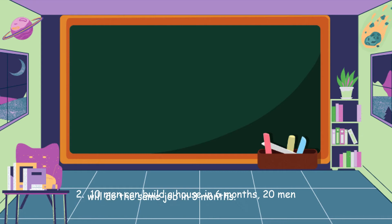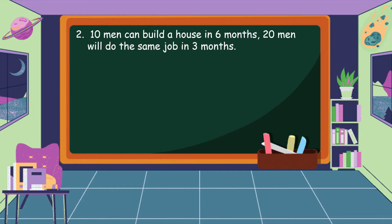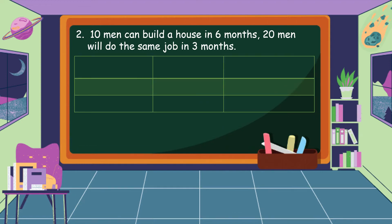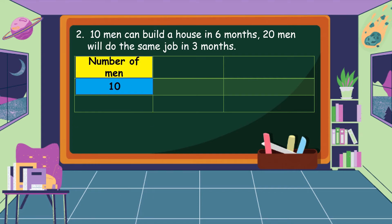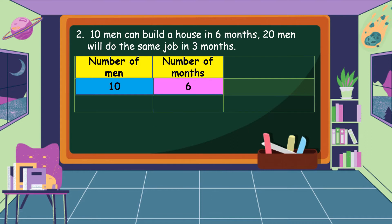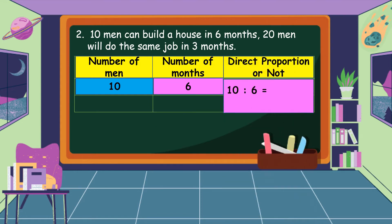Second situation: 10 men can build a house in 6 months, and 20 men will do the same job in 3 months. Let's analyze the situation. For the first statement, 10 men can build a house in 6 months, so we can make our first ratio, and it is 10 is to 6.